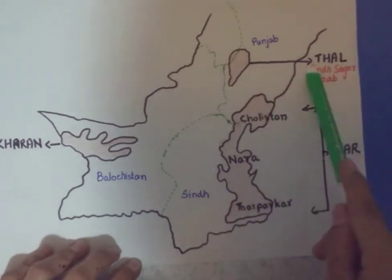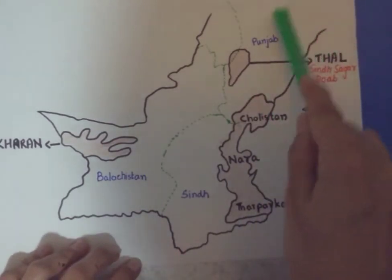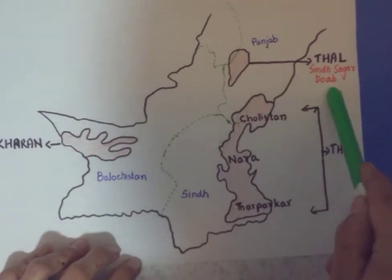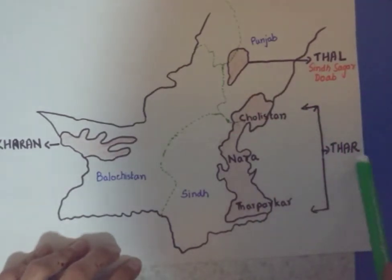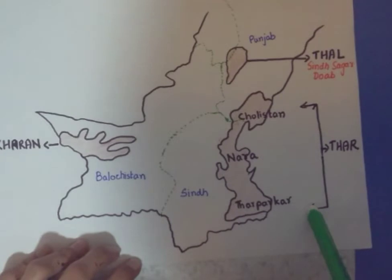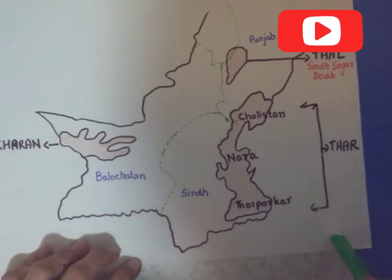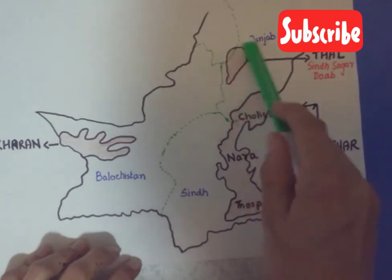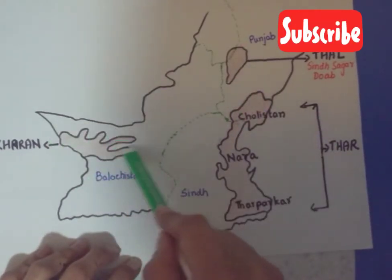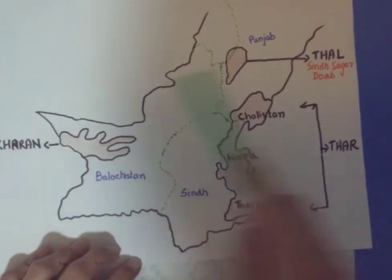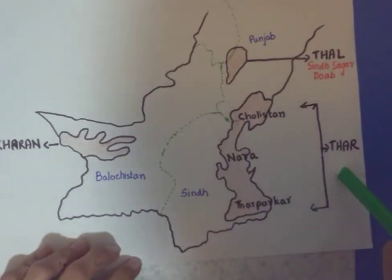The Thal desert lies between two rivers — the Indus River and the Jhelum River. An area between two rivers is called a Doab, and this particular Doab is called the Sindh Saangal Doab. The Thar desert is further divided into 3 main parts: Jholistan, Nara, and Tharparkar. You need to remember all these names, as you may be asked to identify them on a map in your exams.